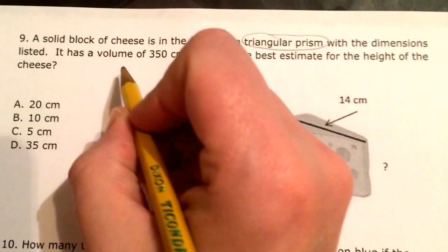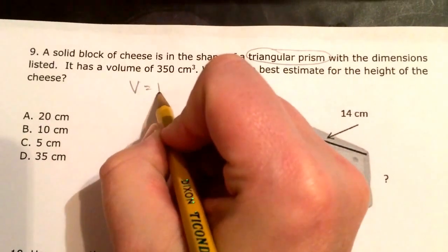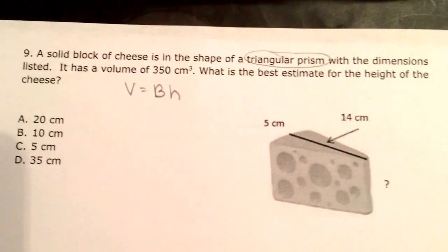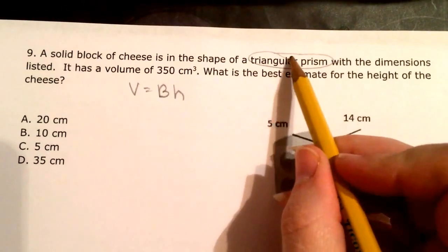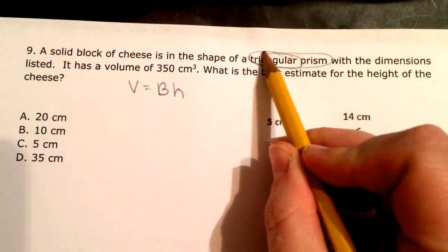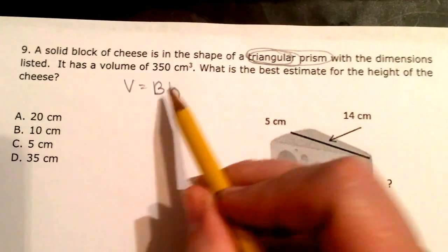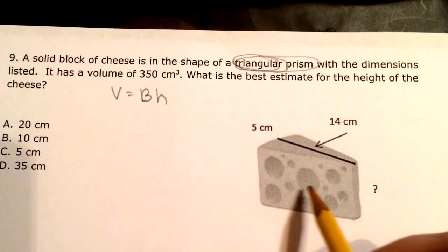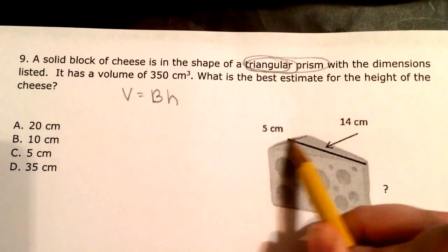Alright, so I know looking at my star chart that volume is equal to area base times height, and I have a triangular prism. And the first word, remember, is all about the base. So my base is a triangle. And if I look right here, here is my triangle.